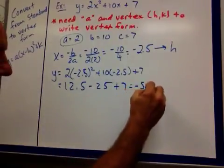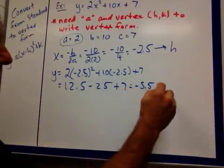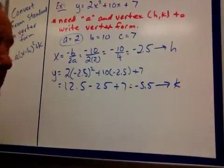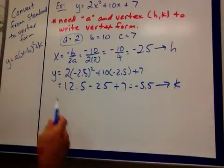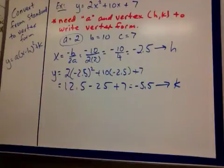I'm going to get negative 12.5 plus 7. So, I'm at negative 5.5. Now, that's my k because k is the y coordinate of the vertex.